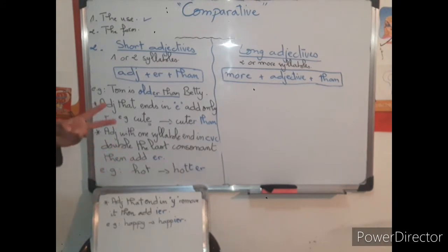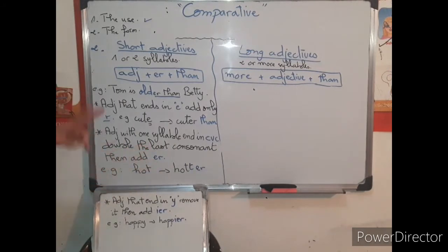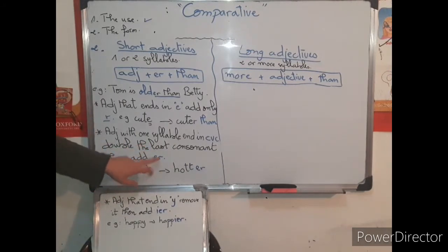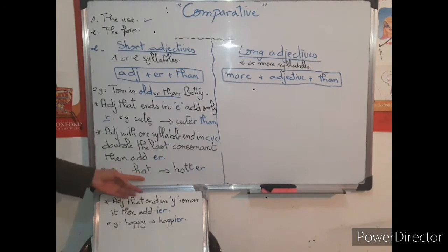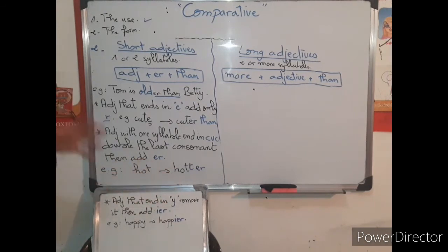We double the last consonant, then we add -ER. For example: 'hot' becomes 'hotter,' 'big' becomes 'bigger.'